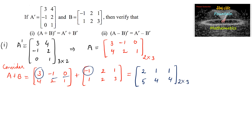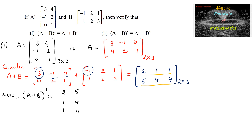Now (A+B) whole transpose: interchange rows and columns. The first row [2, 1, 1] becomes the first column, and the second row [5, 4, 4] becomes the second column. So (A+B)^T = [2, 5; 1, 4; 1, 4], with order 3×2.